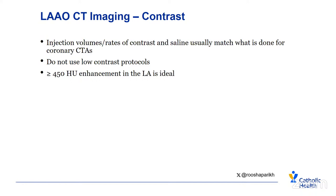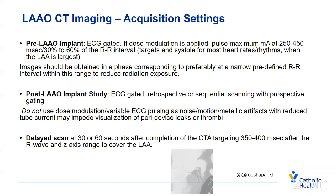Typically, you want more than 450 Hounsfield unit enhancement in the left atrium, which would be ideal. For acquisition settings, pre-implant CT should be ECG-gated. You want dose modulation; if applied, the pulse should be maximum at 250 to 400 milliseconds, which is about 30 to 60% of the RR interval. This targets end systole for most heart rates and rhythms, when the left atrial appendage is largest. Images should be obtained in a phase corresponding to a narrow predefined RR interval within this range, which helps reduce radiation exposure.